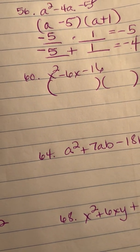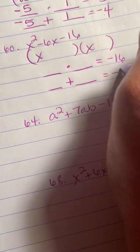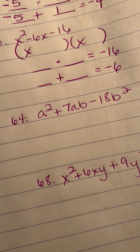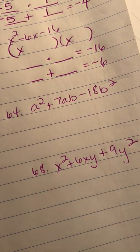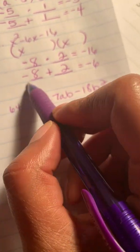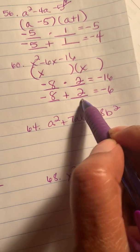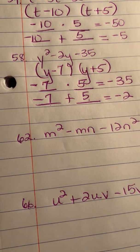Number 60: x² − 6x − 16. Put x here and x here. Two numbers that multiply together to give negative 16 and add together to give negative six. Four times four came to mind but I can't get a six from that. Eight times two works — negative eight times two gives negative 16, and negative eight plus two gives negative six. So this is negative eight and positive two.